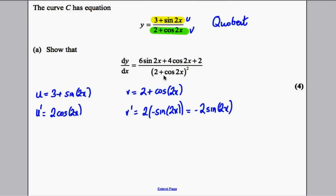Now, the examiner always says, quote the rule you're using before you use it. So the quotient rule is actually in the formula booklet. It's v u dash, subtract u v dash over v squared. Make sure you quote it. It will mean you're way less likely to get it wrong.